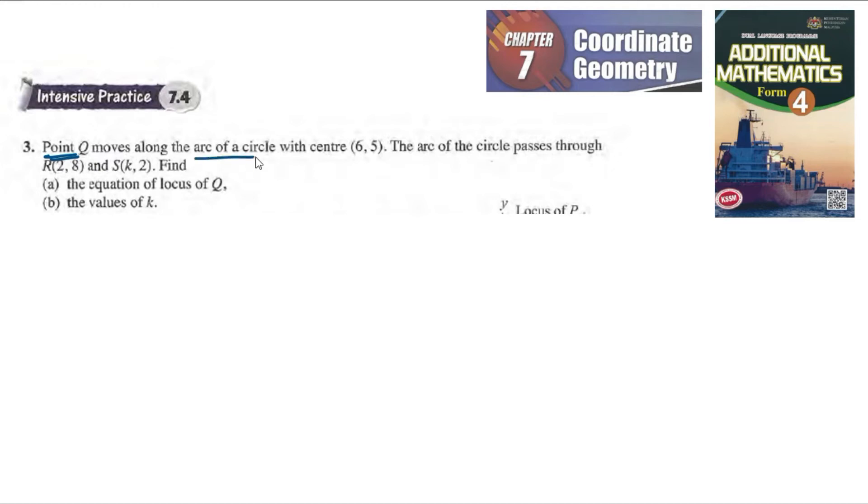Point Q moves along the arc of a circle with center (6,5). The arc of the circle passes through R and S. Find the equation of locus Q.